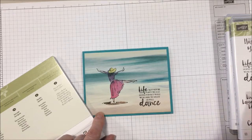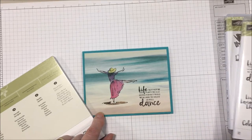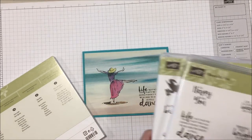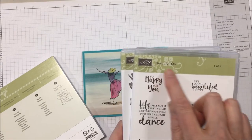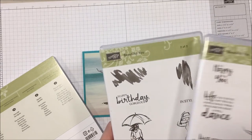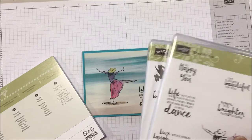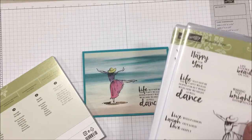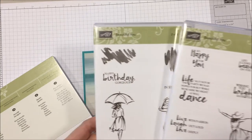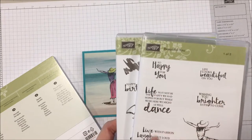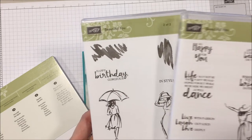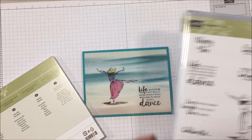This card is very quick and easy. I am using a new stamp from the Occasions Catalog. It's Beautiful You. It's a two package stamp. There is a lot in there. I love all the wordings, the lady. It's beautiful. There's so many things you can do with that.